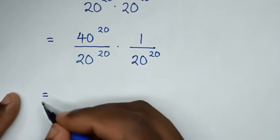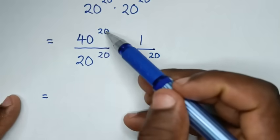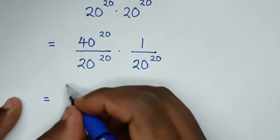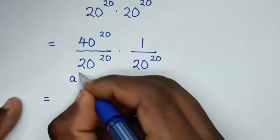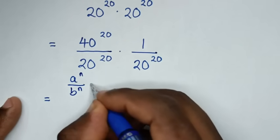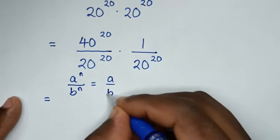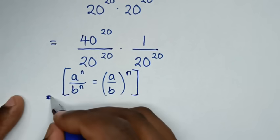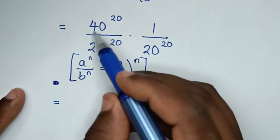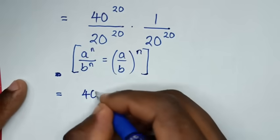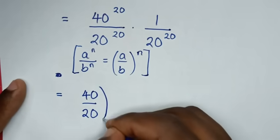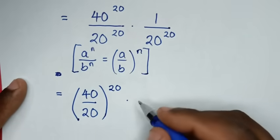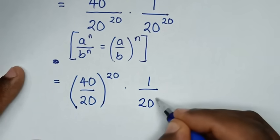Then, in the next step, it will be equal to: we split this as 40 power of 20 over 20 power of 20, then times 1 over 20 power of 20. This divided by this is a division of exponents with the same power of 20. So, on this part here we will apply the rule which is a power of n over b power of n, which is equal to a over b bracket power of n. So, it will be equal to 40 over 20, bracket power of 20, times 1 over 20 power of 20.